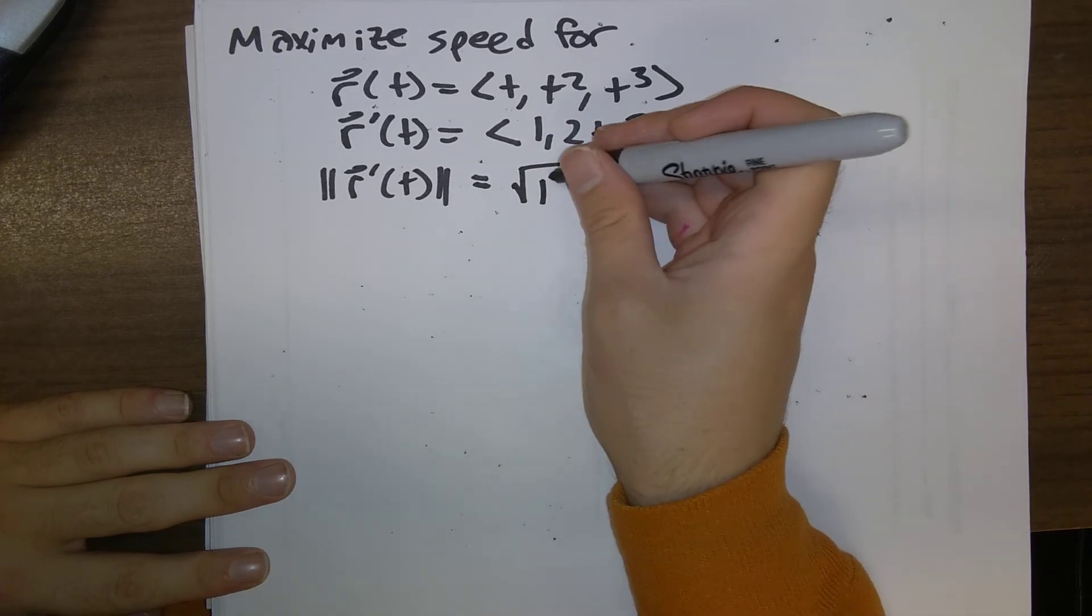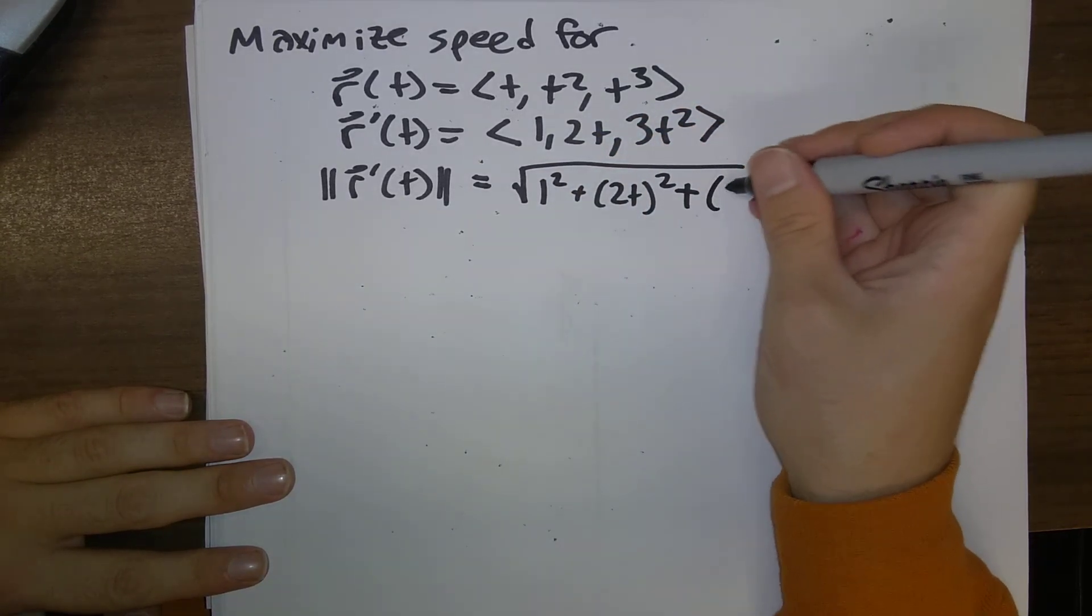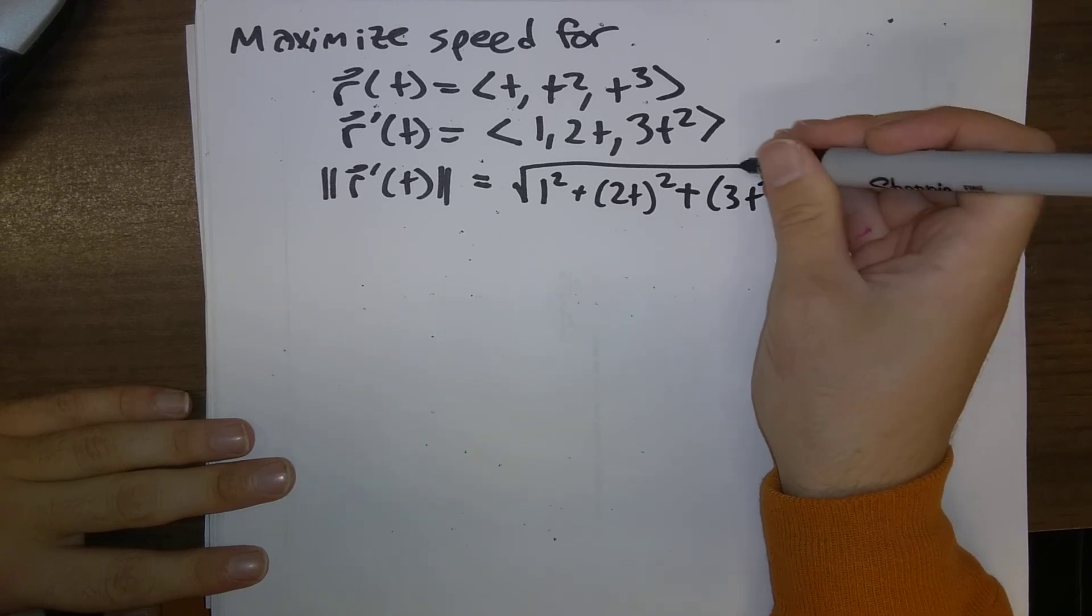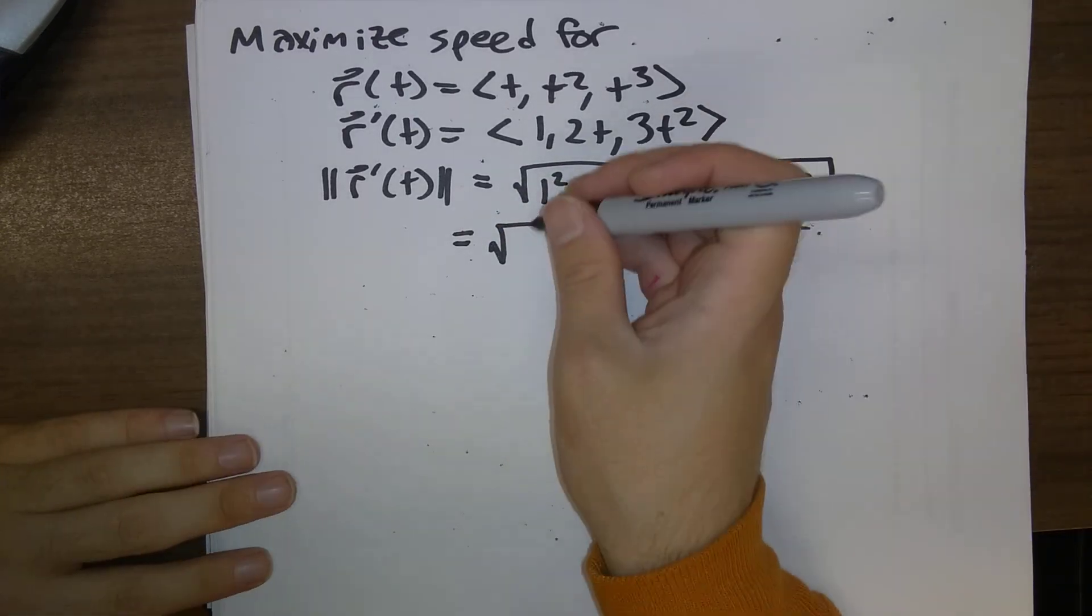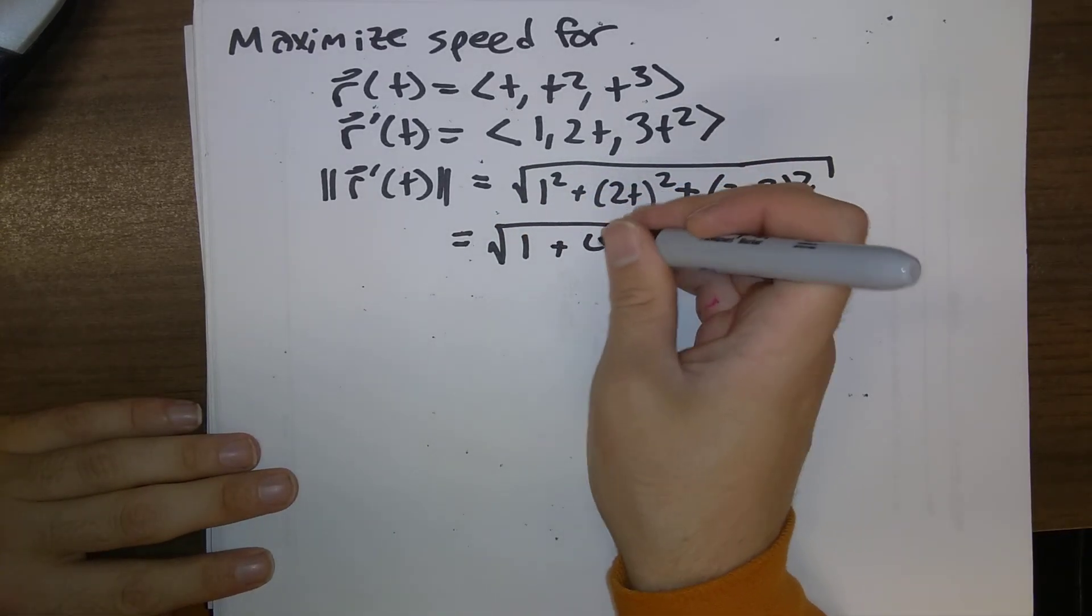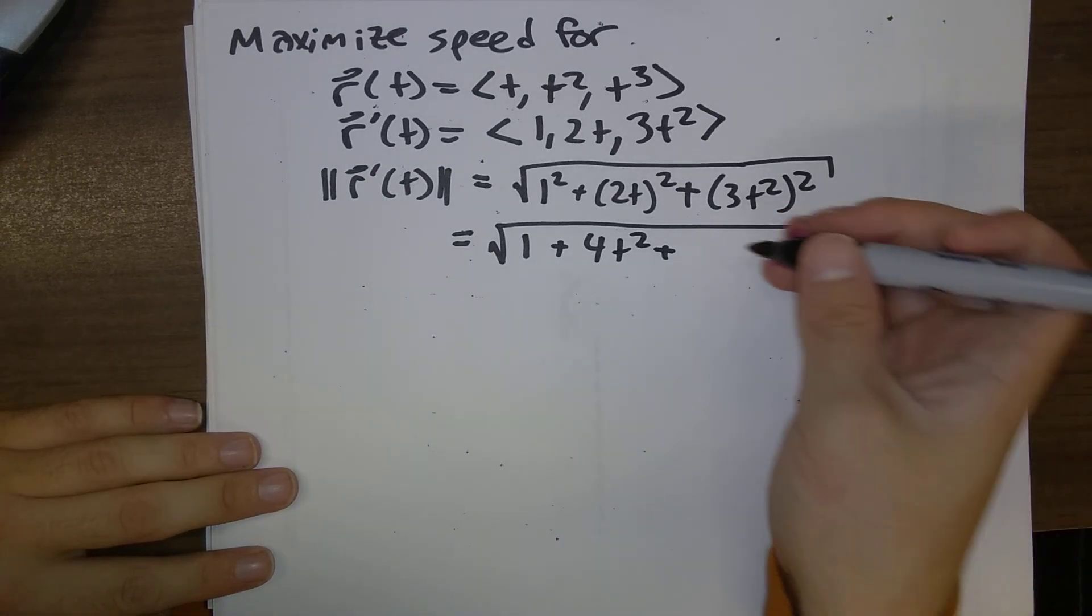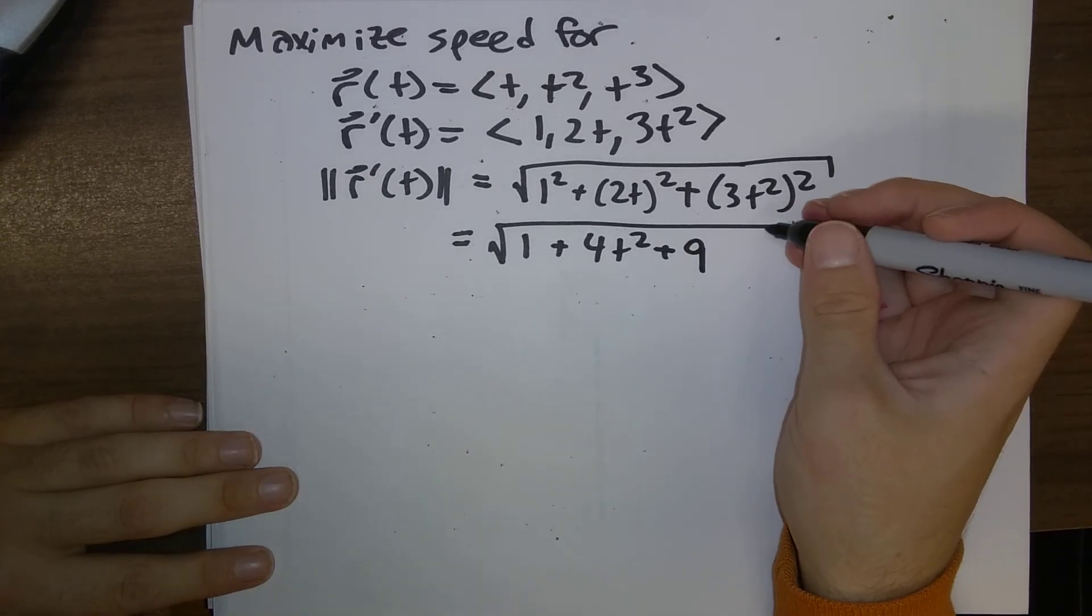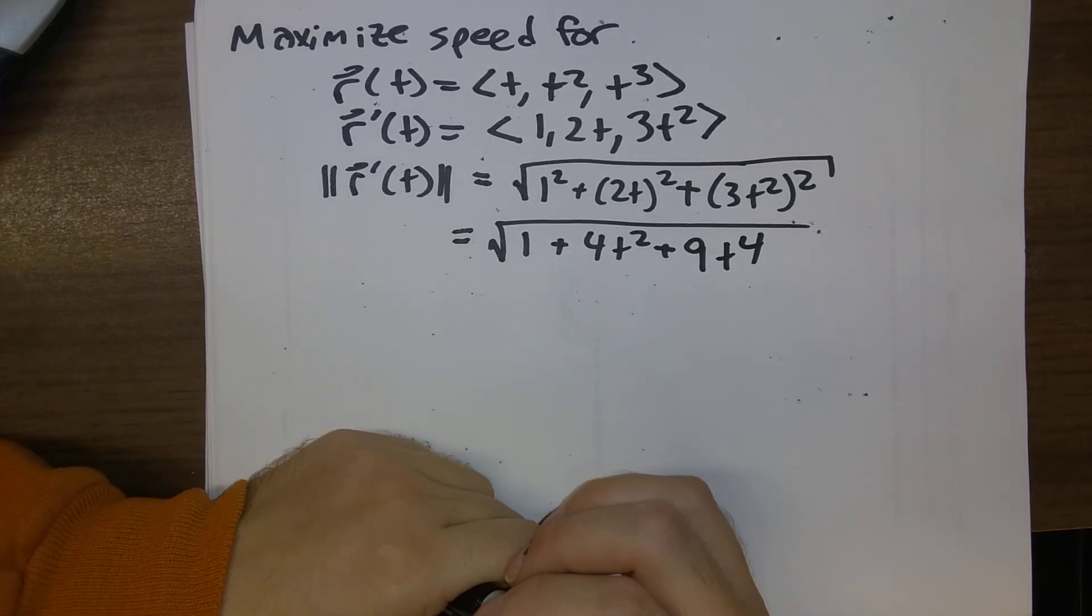Square root of 1 squared plus 2t quantity squared plus 3t squared quantity squared. So, what do we end up with? 1 plus 4t squared plus, that looks like a 9t to the fourth.